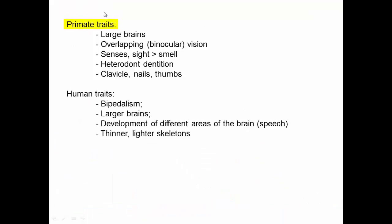Now let's think about the traits that define primates and humans. Primates in general have large brains, overlapping binocular vision providing 3D depth perception, and a prioritization of sight over smell — unusual among mammals. My dog, for example, is far more interested in how people smell than what they look like, but primates have devoted more and more of the brain to sight and less to smell.